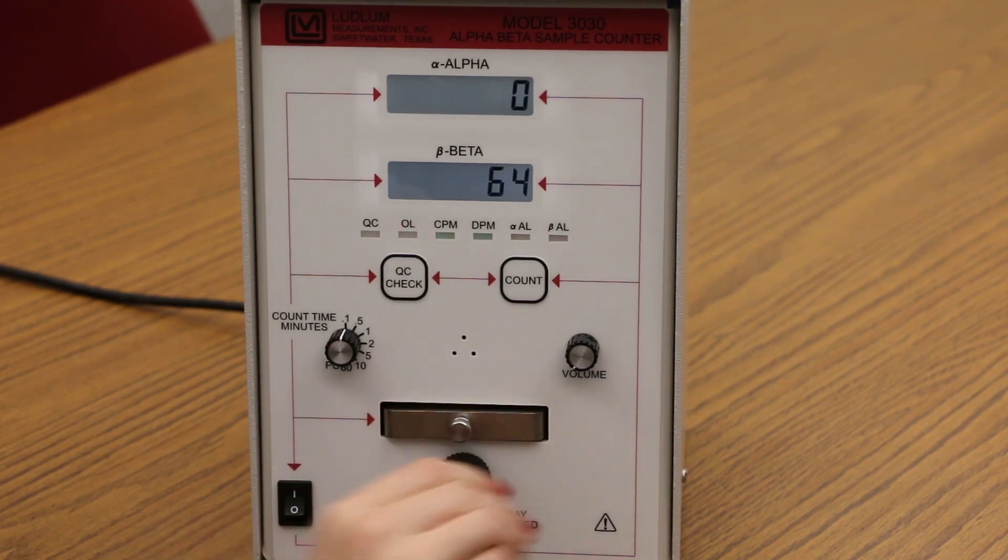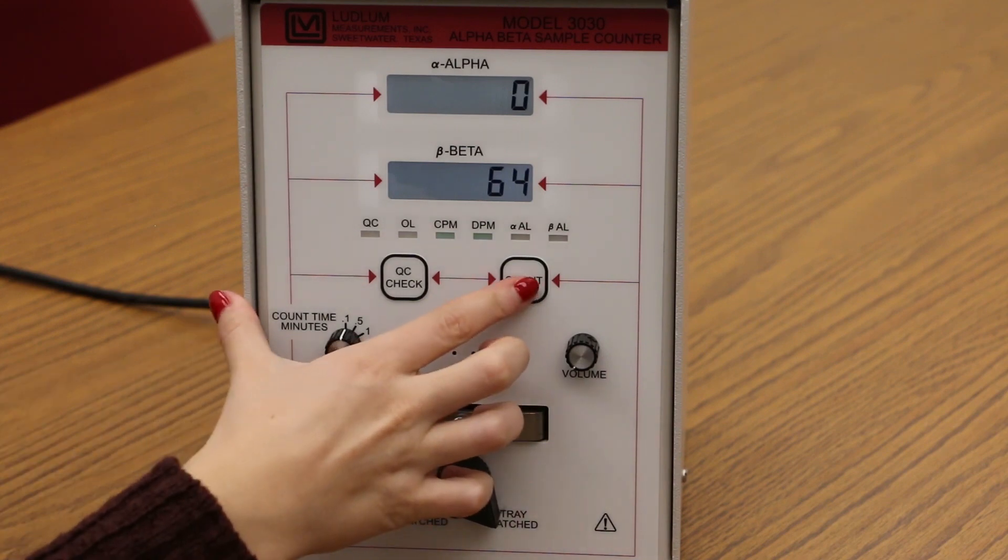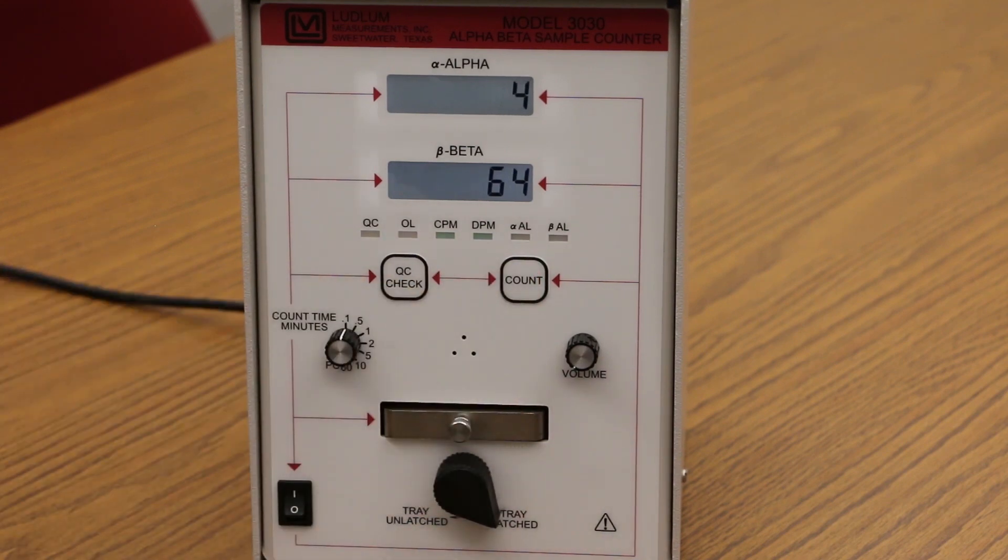Close the tray. Turn the tray knob to the latched position. Press the count button and the instrument will begin a count.